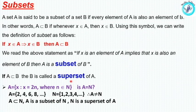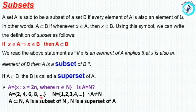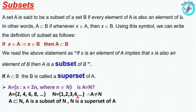If A is the subset of B, then B is the Superset of A. For example, let A be {2, 4, 6, 8} — the set of even numbers — and N be the set of natural numbers. Since all even numbers are included in natural numbers, A is the subset of N, and N is the Superset of A.